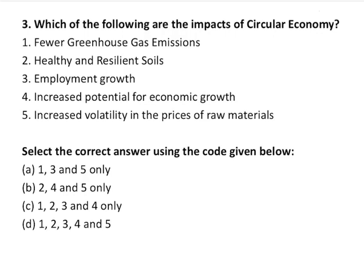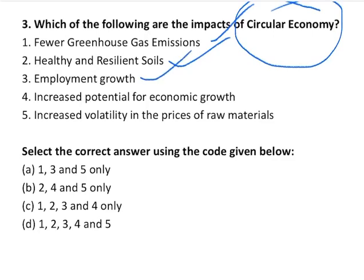Question number three is about circular economy. We have to choose the impacts of circular economy. The first says fewer greenhouse gas emissions — this is an impact. Second, healthy and resilient soils — also an impact. Third, employment growth — also correct. Fourth, increased potential for economic growth — also correct. The fifth says increased volatility in the prices of raw material — this is wrong, because circular economy leads to less volatility in raw material prices, not more. Statements one, two, three, and four are correct, so the correct answer is option C.